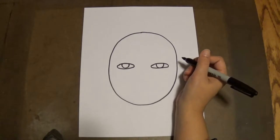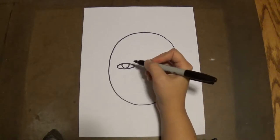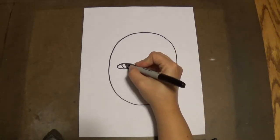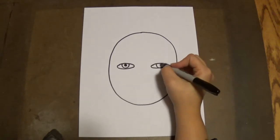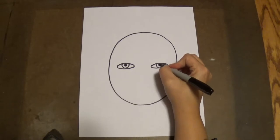Good job, kindergarteners. Then we're going to make the pupil, the black circle in our eyes. So we're going to make a black circle in the middle of our eye. And we're going to do the same thing on the other side.